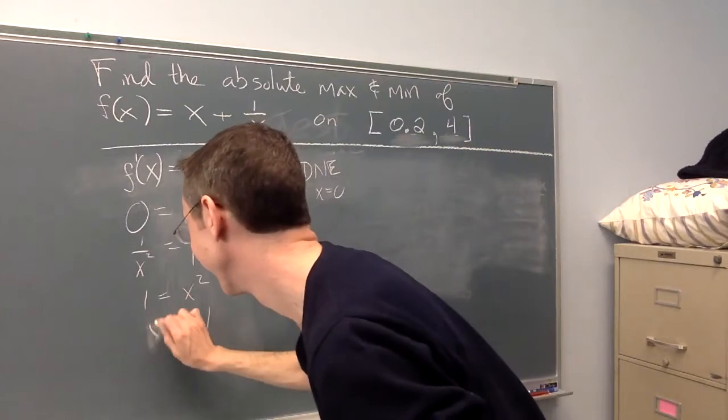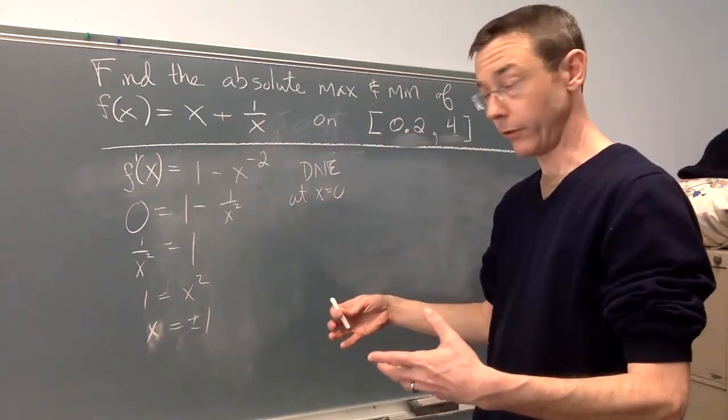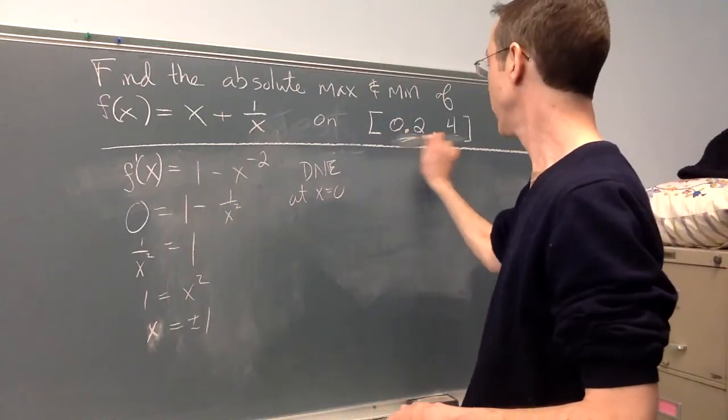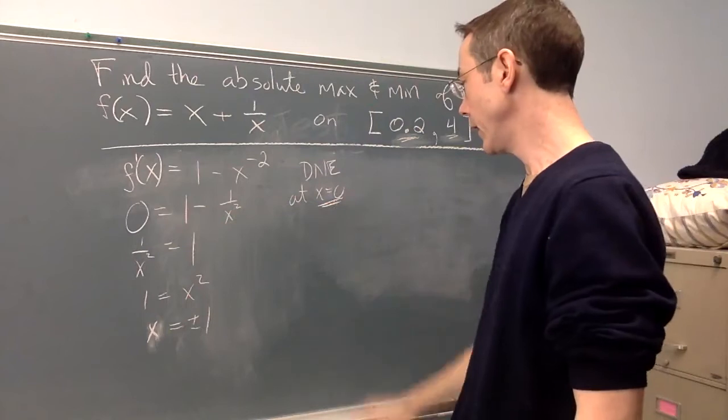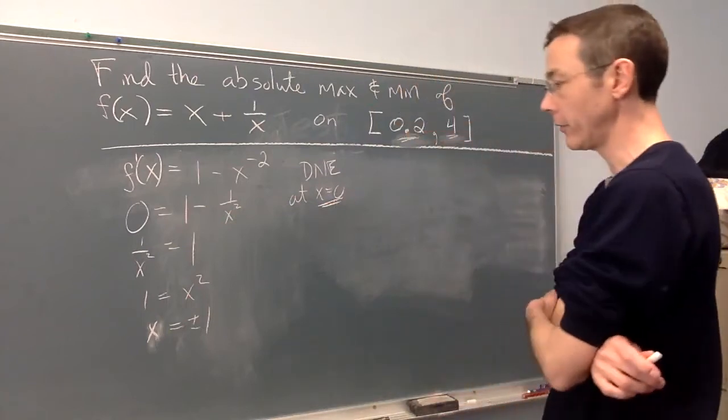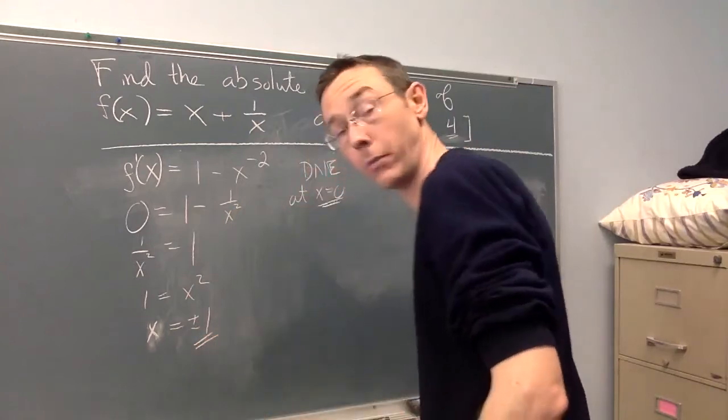Make that a little neater. Okay, great. So overall I've got five points I need to consider: the endpoints, 0.2 and 4, the critical value candidate x = 0, and then these other two critical value candidates, ±1.